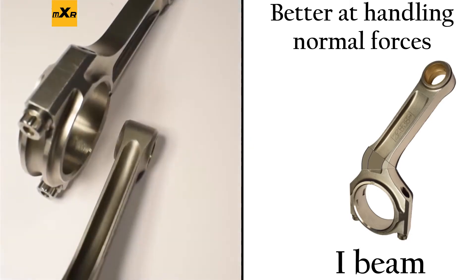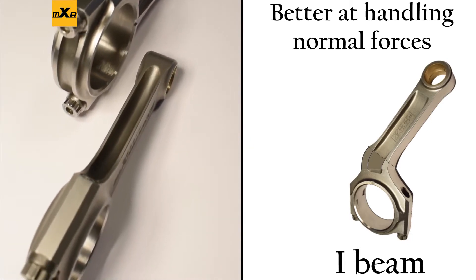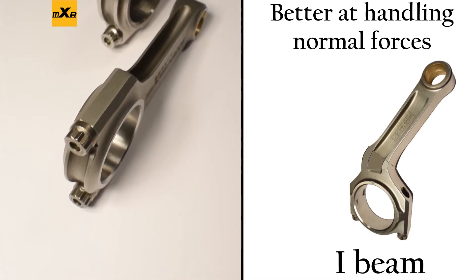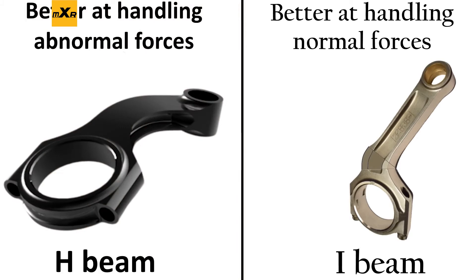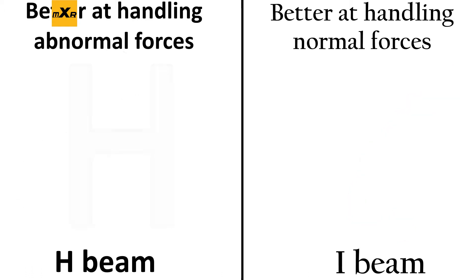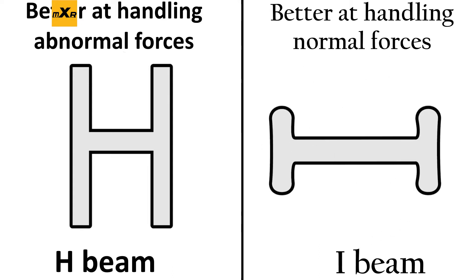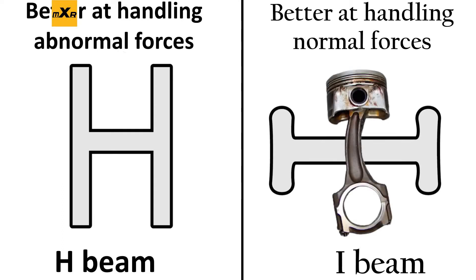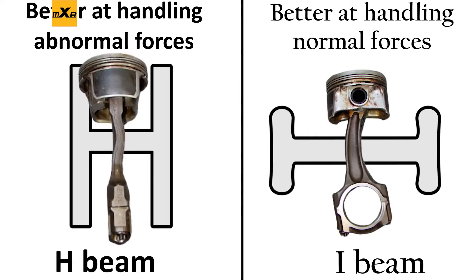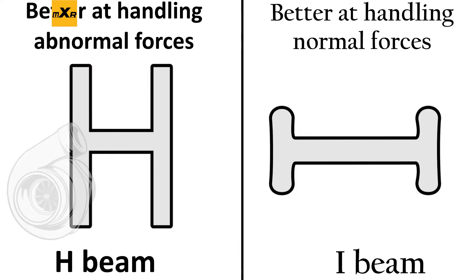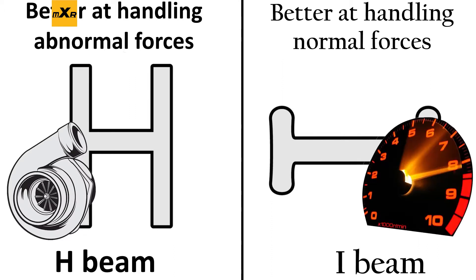Using common sense, it's easy to see why it's hard to bend the H-beam in an abnormal manner because you're working against two wide straight faces held together by a perpendicular face. The I-beam is essentially an H-beam — a broad spread-out letter H turned on its side — and resists normal bending in a similar fashion. This is part of the reason many claim H-beams handle high combustion pressures well while I-beams work great for high RPMs, because normal forces are a greater concern at high RPMs while abnormal forces become a greater concern as combustion pressures increase.